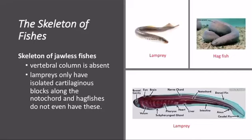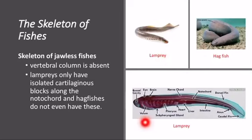The vertebral column is absent in jawless fishes. Here you can see the lamprey and the hagfish — they do not have a vertebral column. Lampreys only have isolated cartilaginous blocks along the notochord, and hagfishes do not even have these, so hagfishes have neither a vertebral column nor cartilaginous blocks along the notochord.